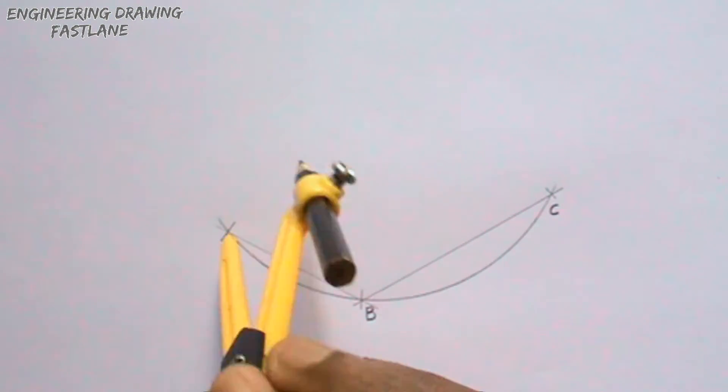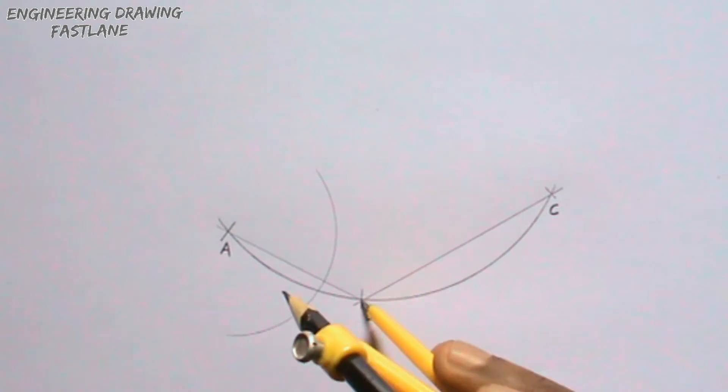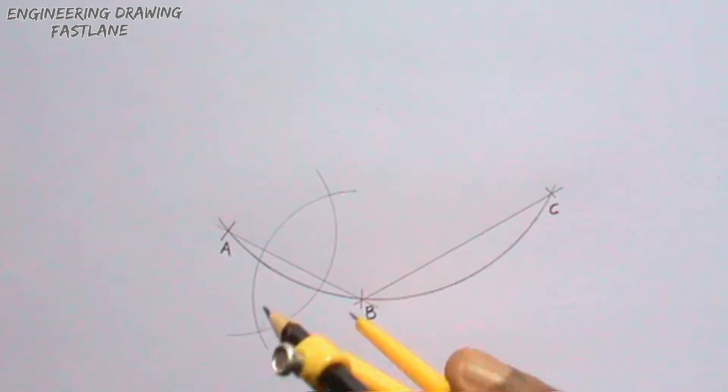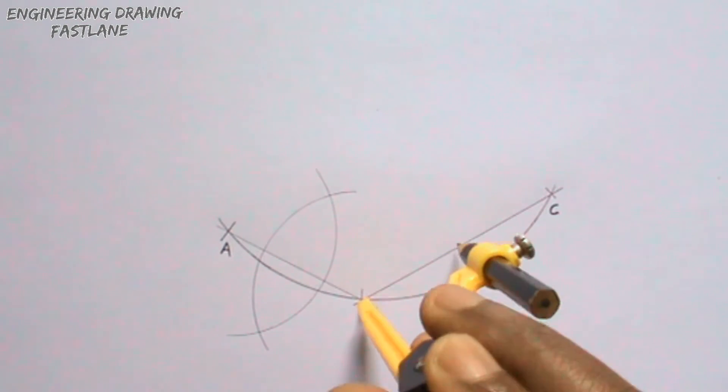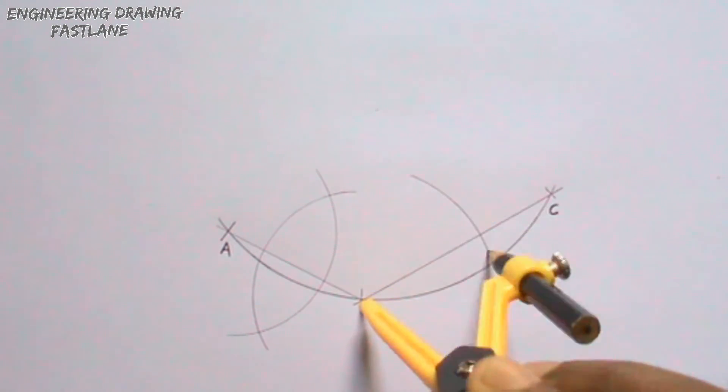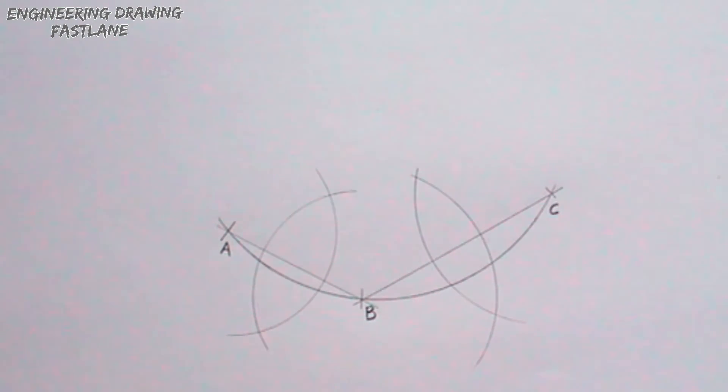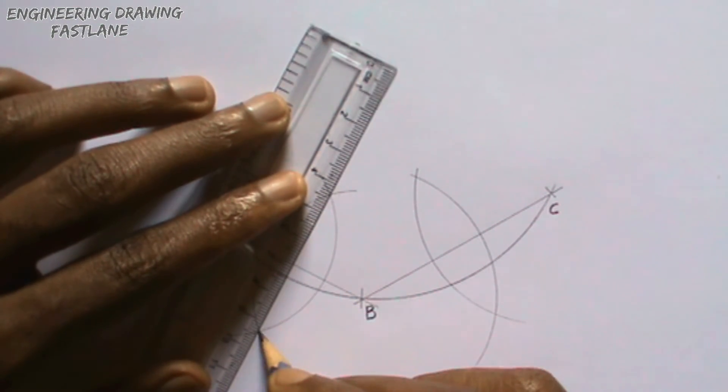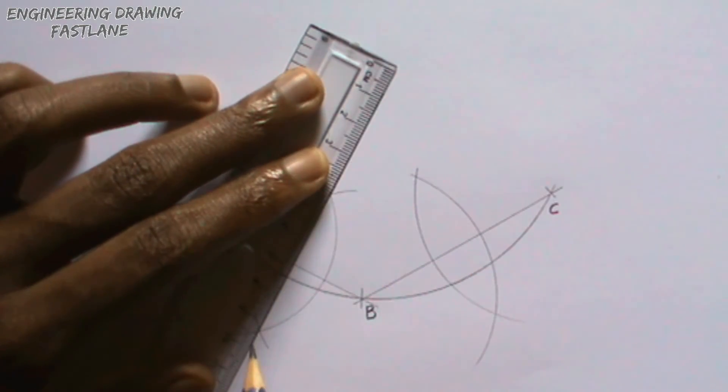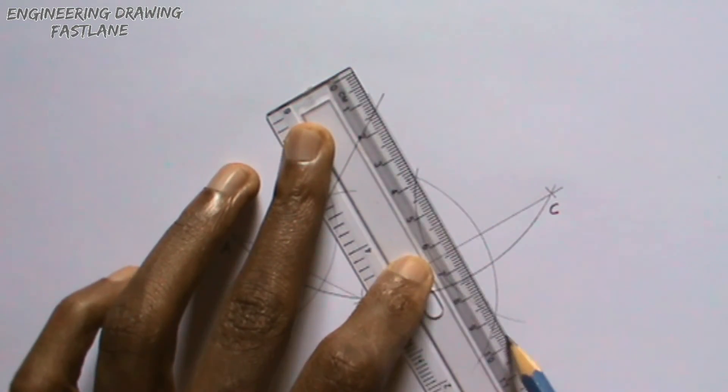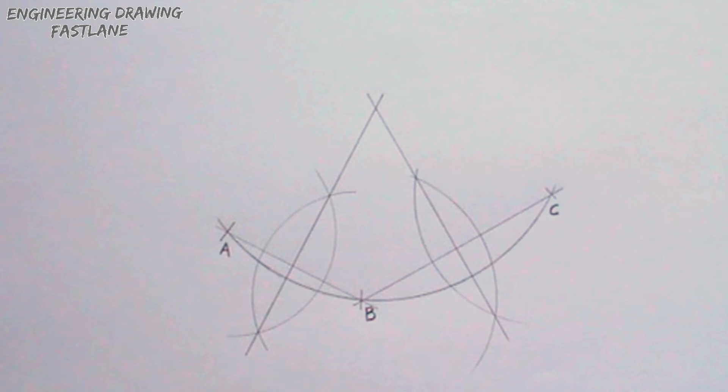Bisect the lines. Produce the bisectors to intersect at a point. Label the point where the bisectors intersect, O. Point O is the center of the arc.